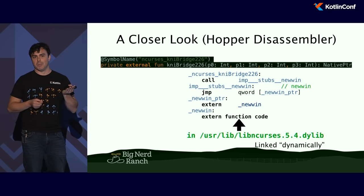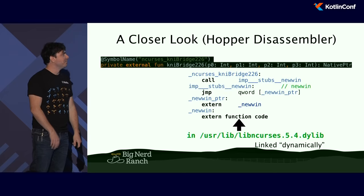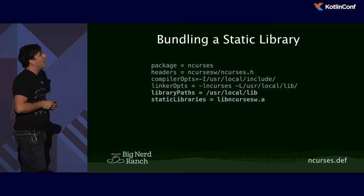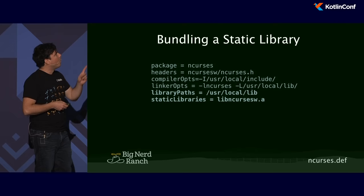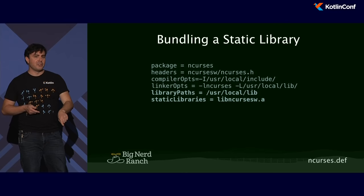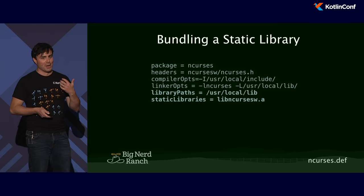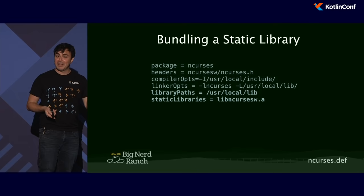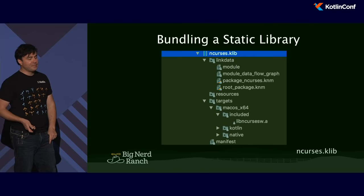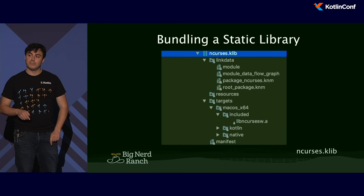Why do I care that it's linked dynamically? If I built k-querium and gave you the binary and you didn't have NCurses installed on your system, it would blow up at runtime. That's what linking dynamically means. But with the DEF file, you can specify a static library — notice the .a, that means static — and embed it in your program.kexe. This definition actually does that for me. I could hand you the binary without any need for these dependencies on your system. That feels a lot more like what we're used to with Java. Once I've done that, the .a is actually included in that klib file.